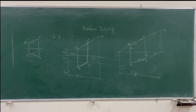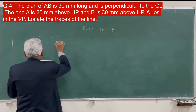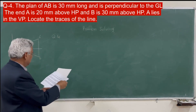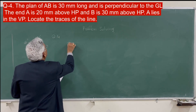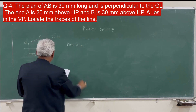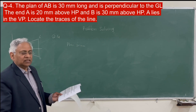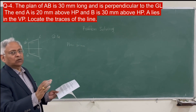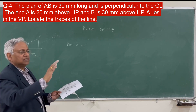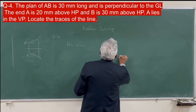The plan of line AB is 30 millimeters long and it is perpendicular to the ground line — that means the line is in the profile plane. The line is in the profile plane. A is 20 mm above HP by 20 millimeters, so A dash is here. B is 30 millimeters from the ground — so B is here.